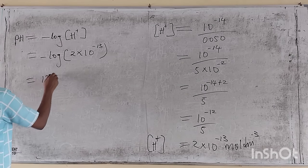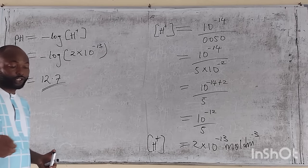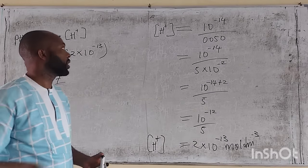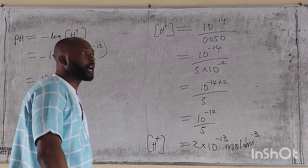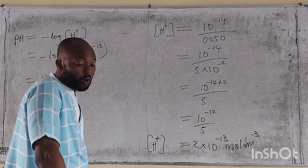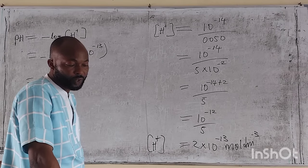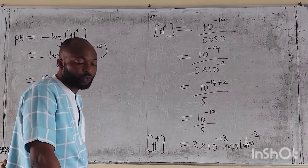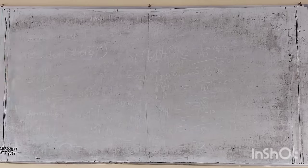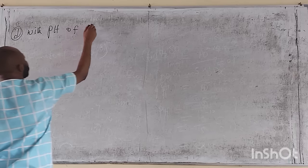A pH of 12.7 shows that the solution is alkaline in nature. That was part C. Now part D says we should calculate the hydrogen ion concentration and hydroxide ion concentration in a solution with pH of 5.0 and pH of 1.55.